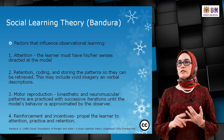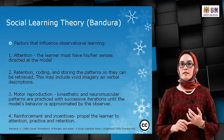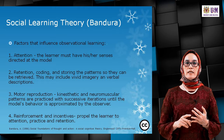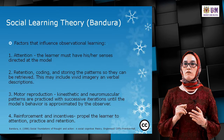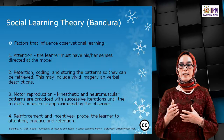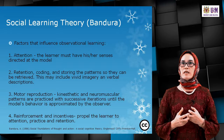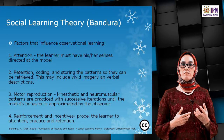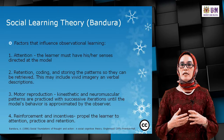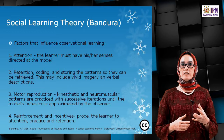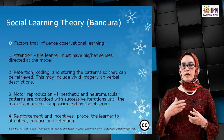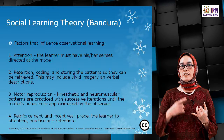For attention, the learner must have their senses directed at the model. Retention involves coding and storing patterns so they can be retrieved, which may include vivid imagery or verbal description. Motor reproduction involves kinesthetic and neuromuscular patterns practiced with successive iterations until the model's behaviour is approximated by the observer. Reinforcement and incentive propel the learner toward attention, practice, and retention. Under constructivism, reinforcement, incentive, attention, and retention are all important — consistent with Gagne's Nine Events of Instruction.